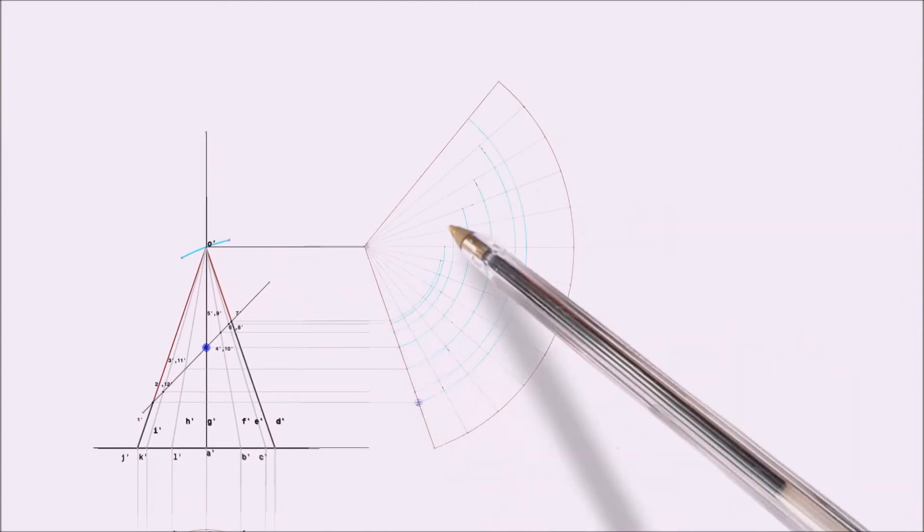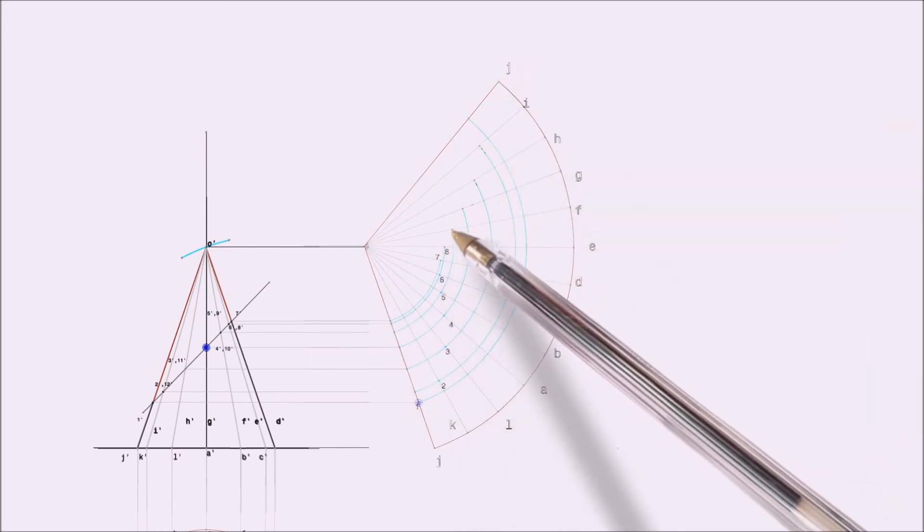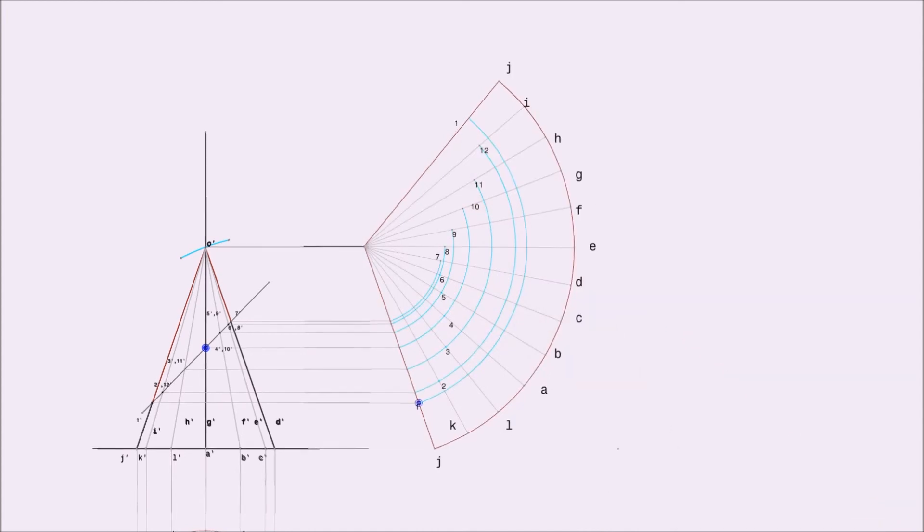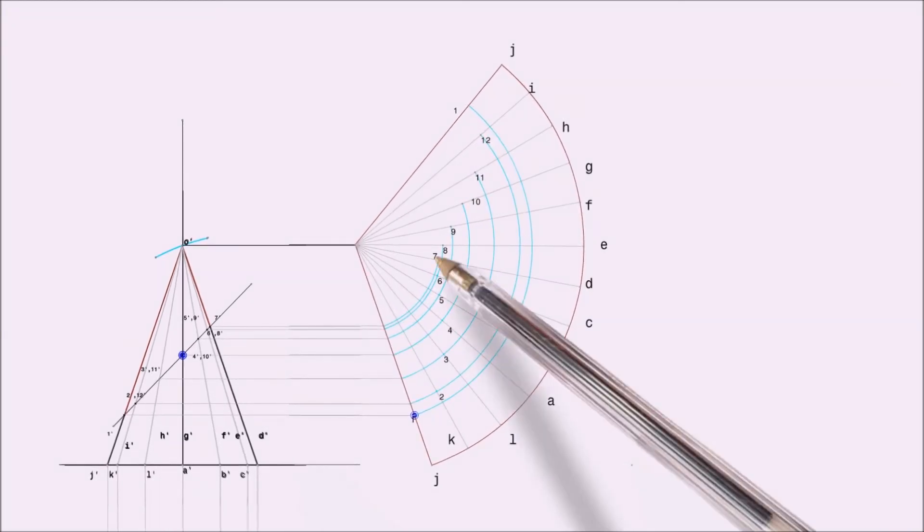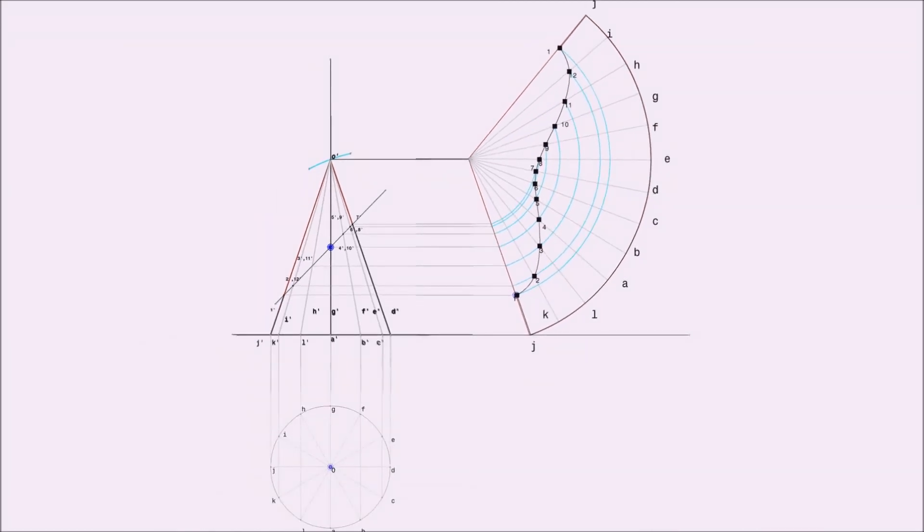Project points 1, 2, 3, up to 12 from front view to corresponding lines in development and mark points 1, 2, 3, up to 12 respectively as shown. Join all these points by a smooth freehand curve.